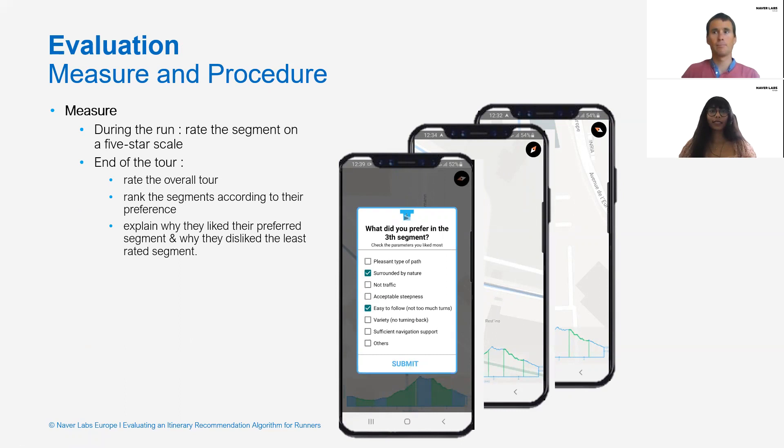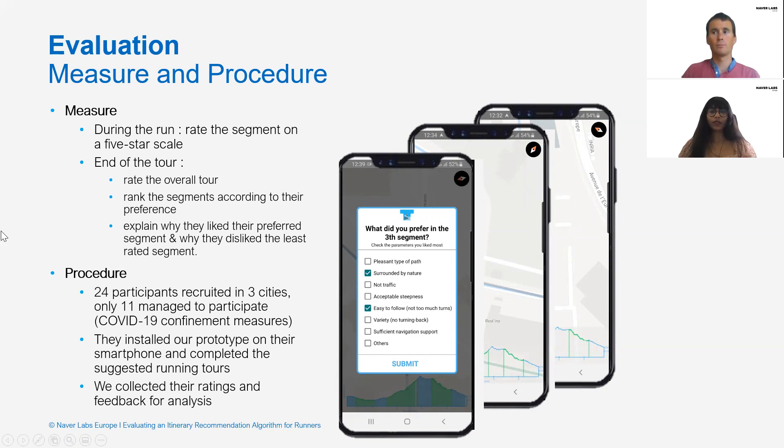We recruited 24 participants in three different cities in France, but only 11 of them were able to participate due to COVID confinement measures. Participants installed our prototype on their smartphone, selected a starting point far from their usual running places, and completed the suggested running tours. We collected their ratings and feedbacks for analysis.